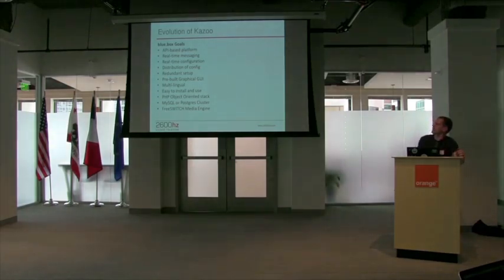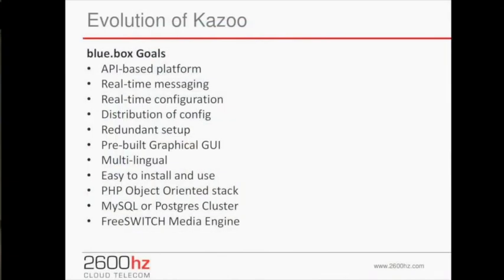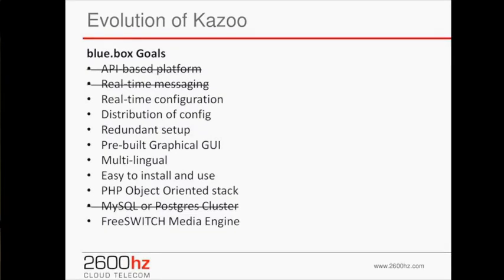These are some of the goals of the original BlueBox project — we kind of met some of them. It wasn't really API-based; it was more a traditional LAMP stack where all the HTML was generated server-side and just displayed. It didn't have real-time messaging — you couldn't really interact with FreeSwitch in real-time. There were efforts, but they were always broken. And being able to swap out your database, they were using Doctrine, which became a nightmare performance-wise.